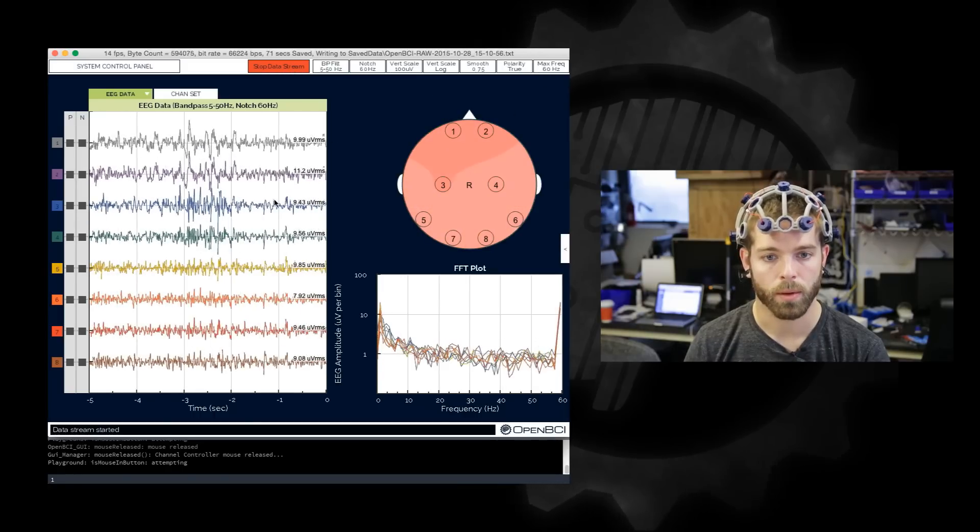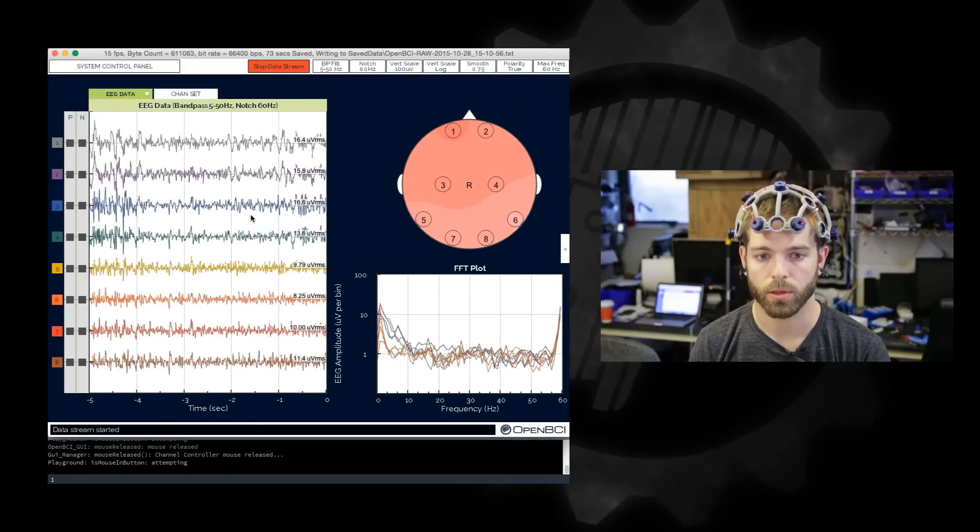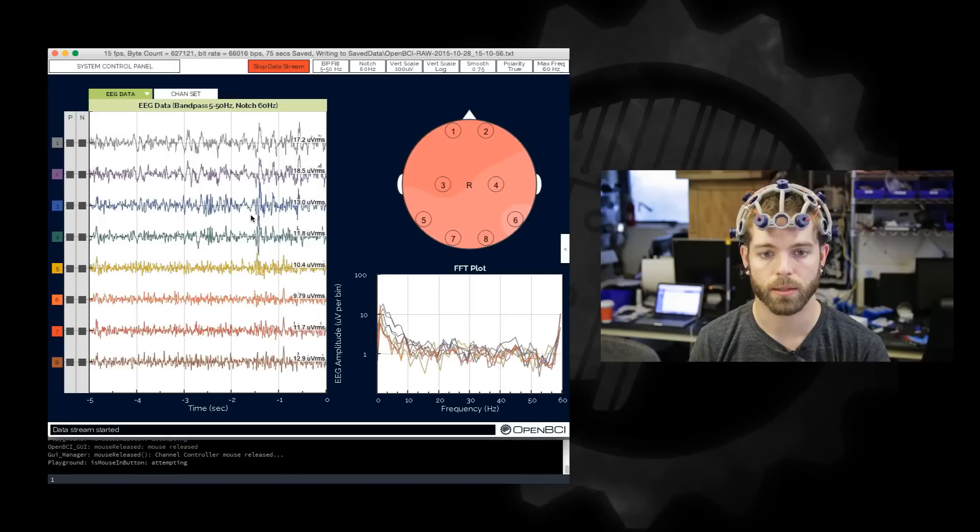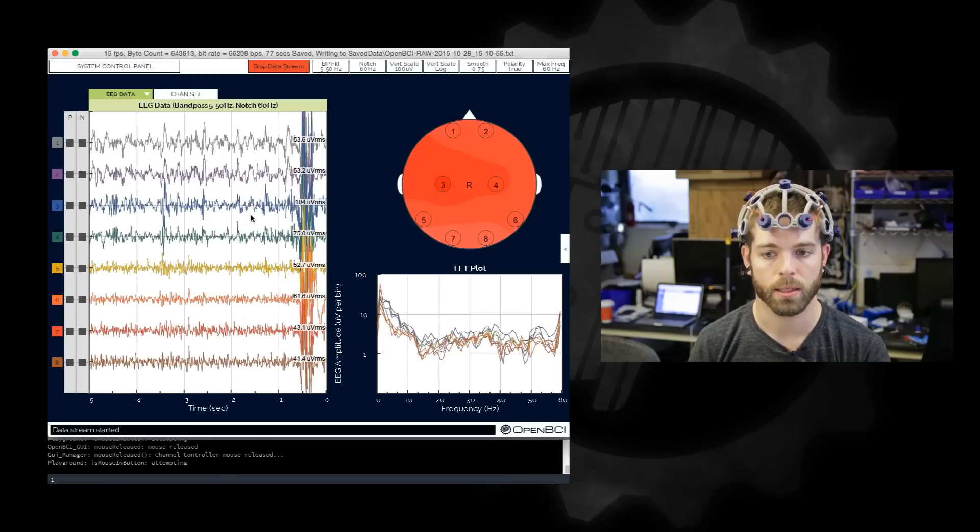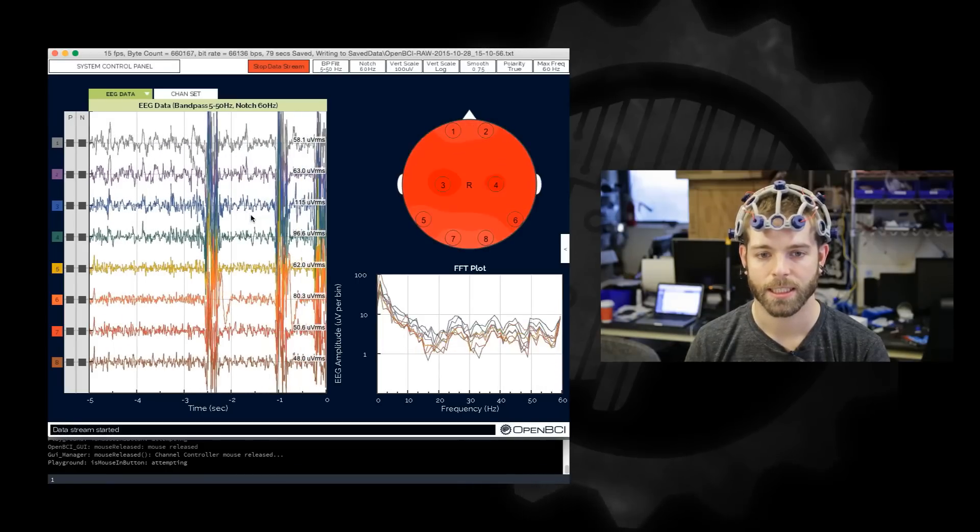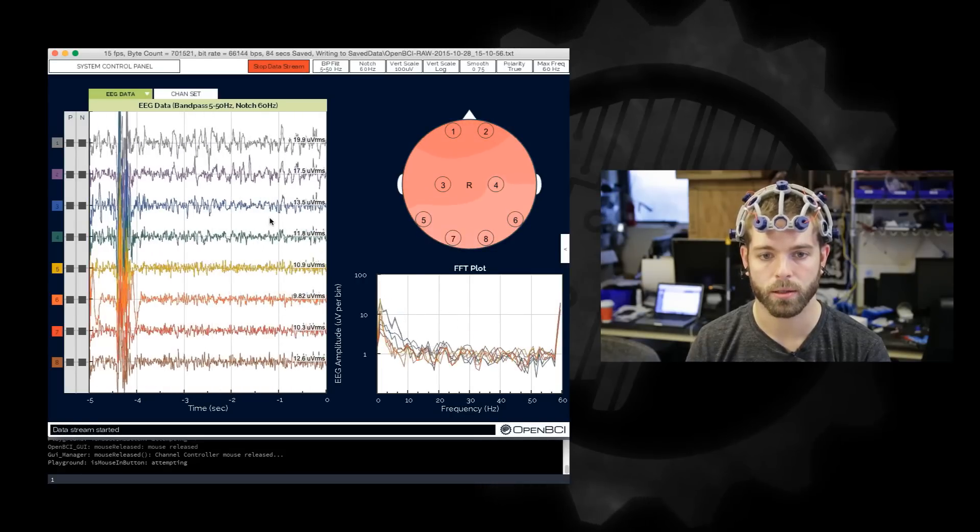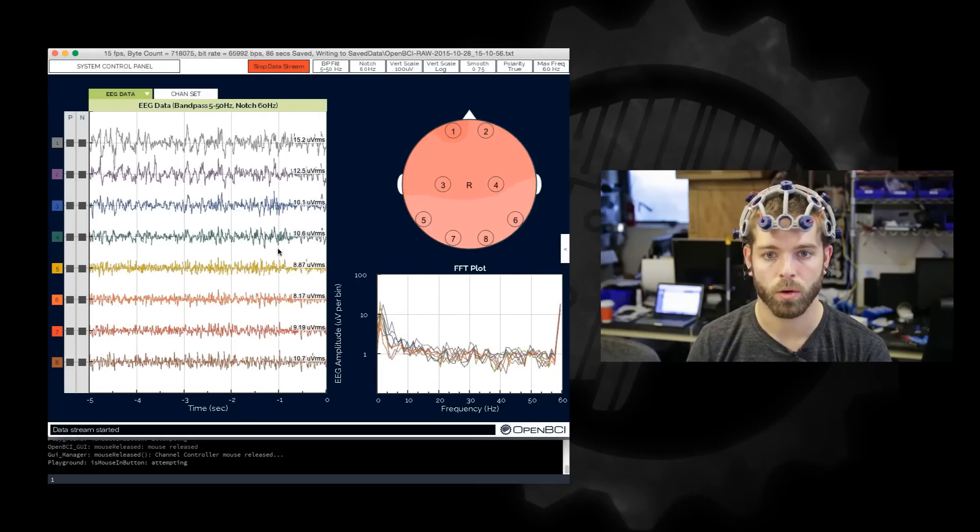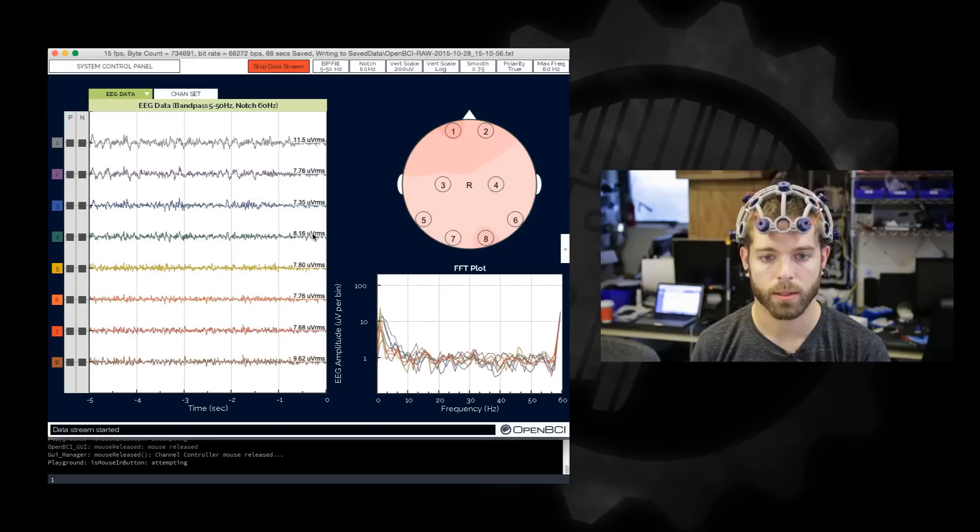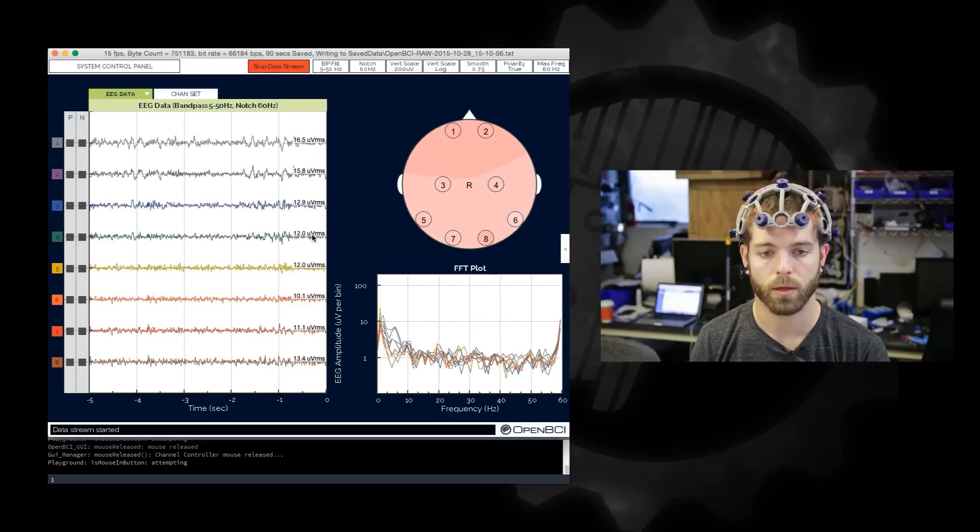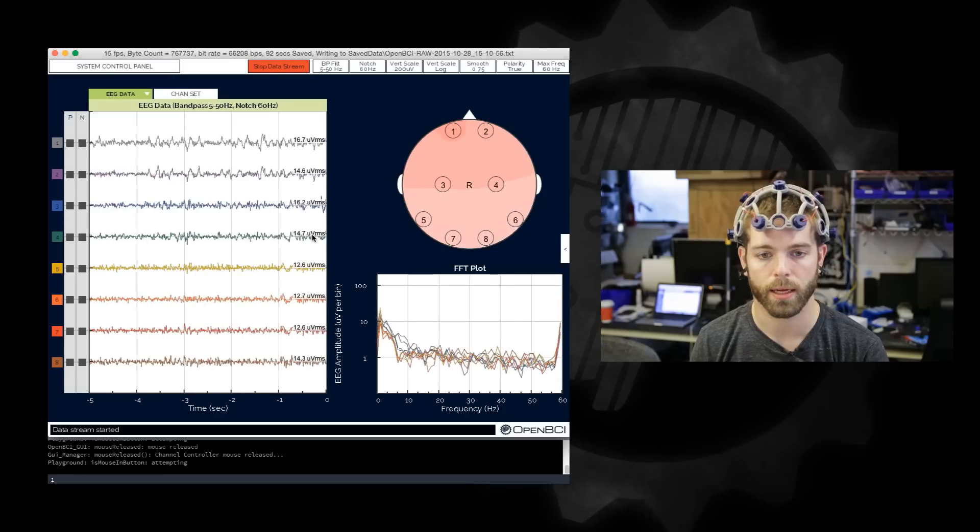So now what I'm going to do is demonstrate jaw grit, so more EMG artifacts. So if I grit my teeth you can see that each time I do that I generate a huge EMG artifact in all eight channels. Now I can also if I turn the scale down ease that in, so I have a certain analog control over the data.